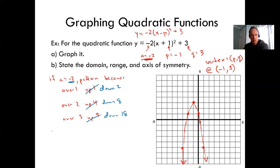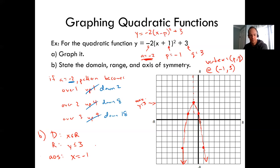State the domain, range, and axis of symmetry. Domain: x is all real numbers — easy. Range: y is less than or equal to 3. The highest point is the vertex, which is the maximum at y equals 3, so y is everything less than or equal to 3. Axis of symmetry is the vertical line x equals negative 1.